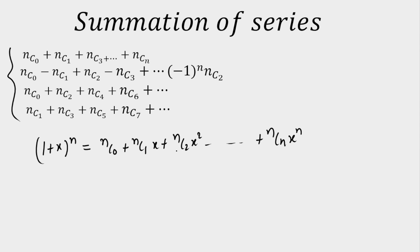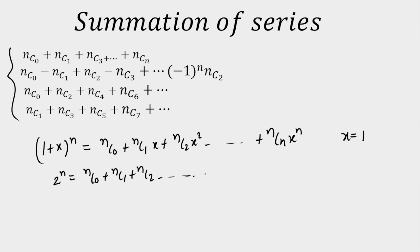Now if you want the sum of binomial coefficients, in order to remove x you put x equal to 1. Directly you will get the sum of binomial coefficients, and that will be equal to 2^n, as nC0 plus nC1 plus nC2 and so on till nCn.